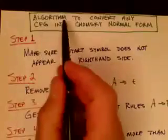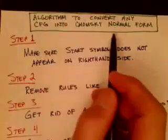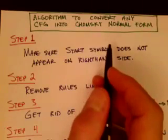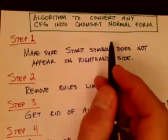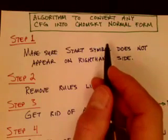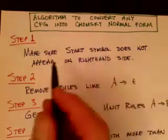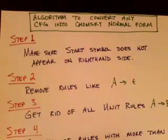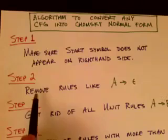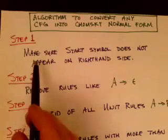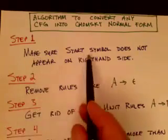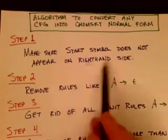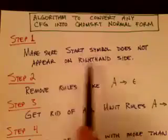Now we're going to give the algorithm to convert any context-free grammar into Chomsky normal form. It's a rather complex procedure — not particularly difficult, but full of details and probably best done by a computer. We'll work through a lengthy example to show the algorithm in detail. In this slide, we'll talk about the overview of the algorithm and show the different steps, and then in subsequent slides we'll go through an example showing these steps.